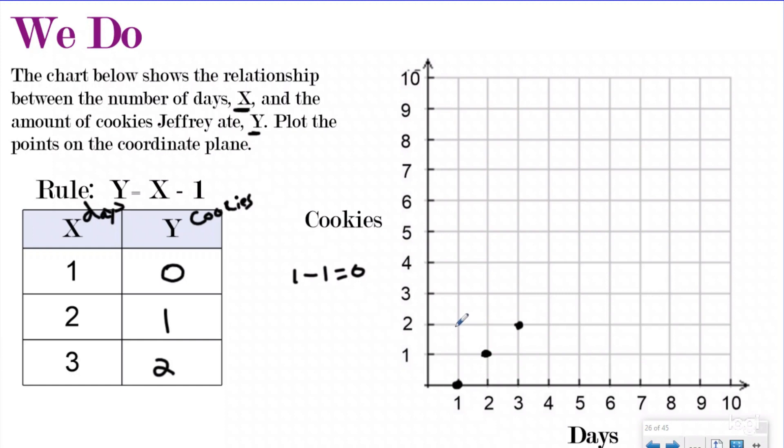The cool thing about this is now, because you can see the straight line and you can see the pattern of going over one and up one, you can answer a question like, how many cookies did Jeff eat on the fifth day? Well, on the third day, if he ate two, that means on the fourth day, he would eat three. And on the fifth day, he would eat four. So you can actually use your graph that you're making by plotting your points to help you answer questions.